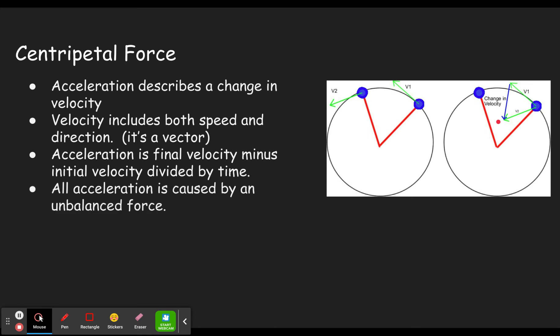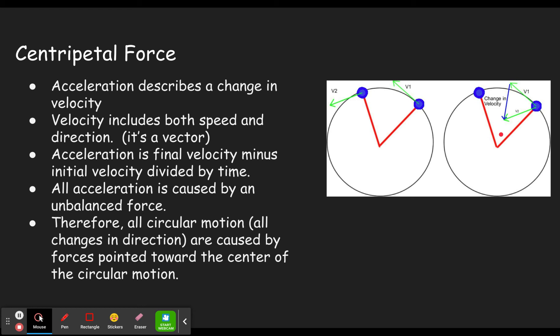We know all acceleration is caused by an unbalanced force. That means the net force here, if the acceleration is towards the center, the net force also has to be towards the center. So while the velocity is what we'll call tangential, it goes along the tangent of the circle. The acceleration and the force are both radial. They go along the radius, in other words, towards the center. So all circular motion, all changes in direction are caused by forces pointed towards the center of the circular motion. Whenever you turn at all, you're doing part of a circle, and the force along that part of a circle is always towards the center of that circle.